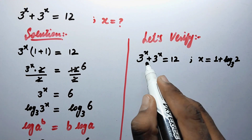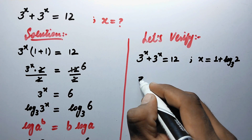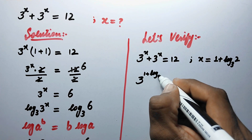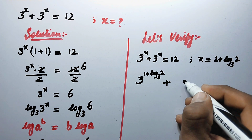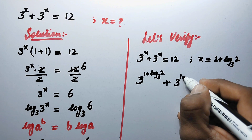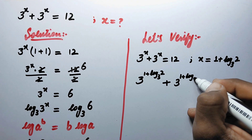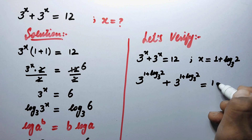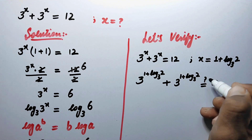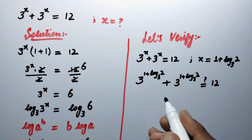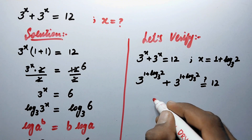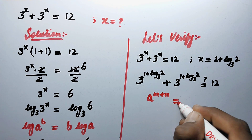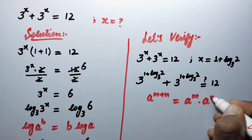By putting the value of x, this equation becomes 3 to the power (1 plus log to base 3 of 2) plus 3 to the power (1 plus log to base 3 of 2) equal to 12, and we have to verify this. As we know, the property of exponents states that a to the power (m plus n) is equal to a to the power m times a to the power n.